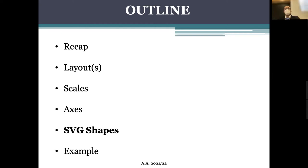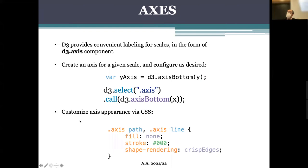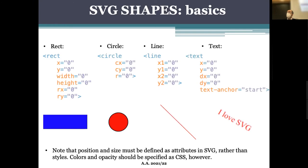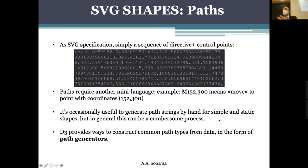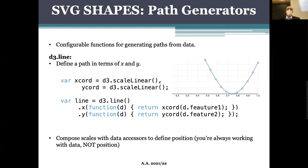Apart from that announcement, we restart from where we left last time. We started looking at how to communicate information about visual encodings through axes on a Cartesian plane, then we looked at SVG shapes and the general hierarchy of SVG — couple vector graphics — and what is and isn't possible. We were starting to focus on how to obtain complex representations, in particular lines.